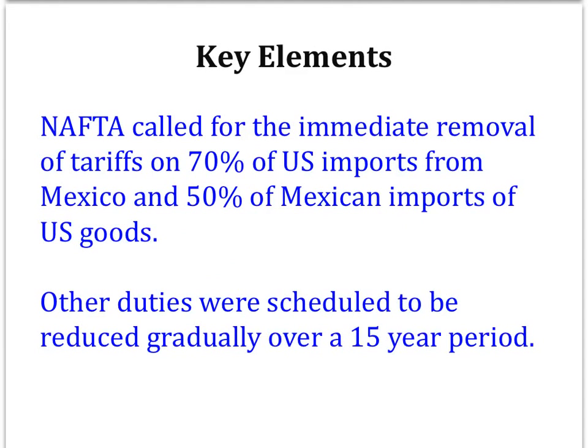What were some of the key provisions of NAFTA? NAFTA called for the immediate removal of tariffs on 70% of U.S. imports from Mexico and 50% of Mexican imports of U.S. goods. Other duties were scheduled to be reduced gradually over a 15-year period. Mexico was to stop its import licensing system, where manufactured goods could only be imported with the okay of the government.